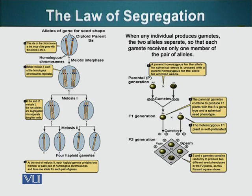The two homologous chromosomes will separate, and in meiosis two, the sister chromatids will also separate, resulting in the production of haploid gametes. Gametes have half the number of chromosomes as compared to their parent.